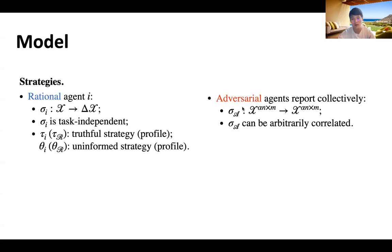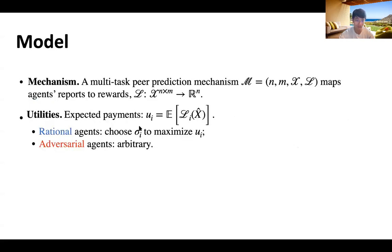As for adversarial agents, we consider a single adversarial agent controlling an alpha-n group of adversarial agents collectively, so their strategy is an arbitrary mapping from their signals to their reports collectively. Furthermore, sigma_a can be arbitrarily correlated across tasks. A mechanism M maps agents' reports to their rewards using a payment function L. We assume there is no cost, so the agent's utility equals the expected value of the payment. Our paper also argues that this no-cost setting can be generalized to any fixed-cost setting easily.